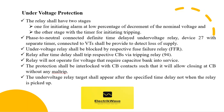The relay after time delay shall trip the respective circuit breaker via tripping relay. The under voltage relay shall be set such that the relay will not operate for voltages that require the capacitor bank into service; adequate margin shall be provided. The protection shall be interlocked with circuit breaker contacts such that it will allow closing of the circuit breaker without any mal-trip. The under voltage relay target shall appear after the specified time delay, not when the relay is picked up.